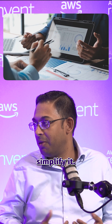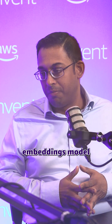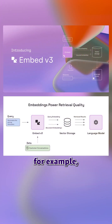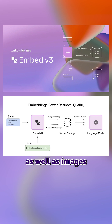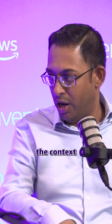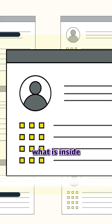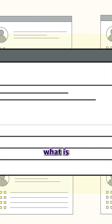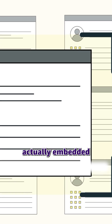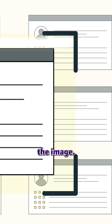You might want to simplify it — we are making that a lot easier now. The latest embeddings model, Mby3, for example, is able to search across both text as well as images and to really understand the context of not just what is in the text, but also what is inside the image, what is maybe in the title, what is actually embedded as text inside the image — really take that in and then provide that intelligence to the generative side.